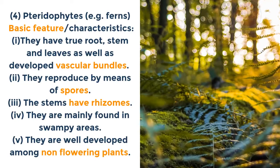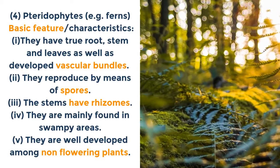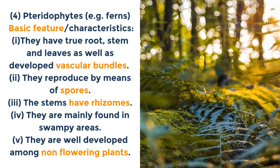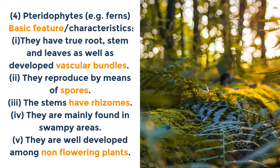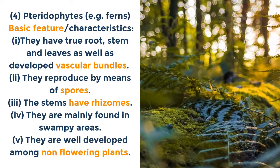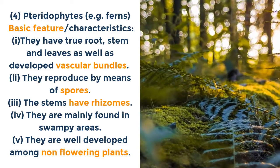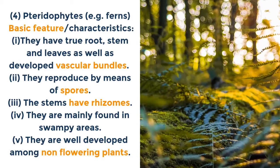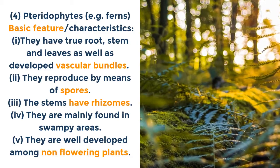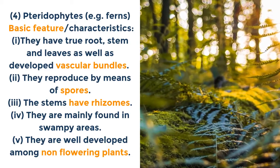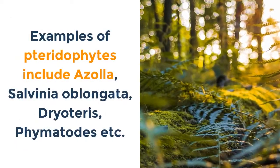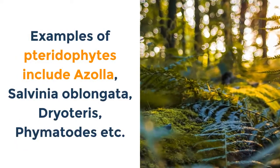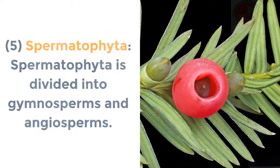Pteridophyta, e.g. ferns — basic characteristics: i. They have true roots, stems and leaves as well as vascular bundles. ii. They reproduce by means of spores. iii. The stems have rhizomes. iv. They are mainly found in swampy areas. v. They are the most well-developed among non-flowering plants. Examples include Azolla, Salvinia oblongata, Dryopteris, Phymatodes, etc.